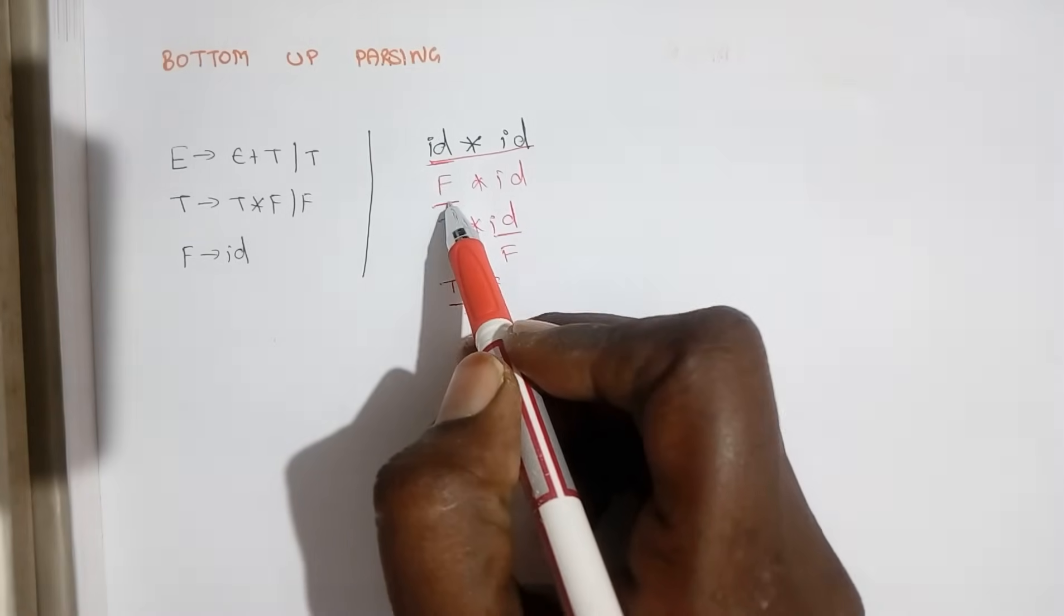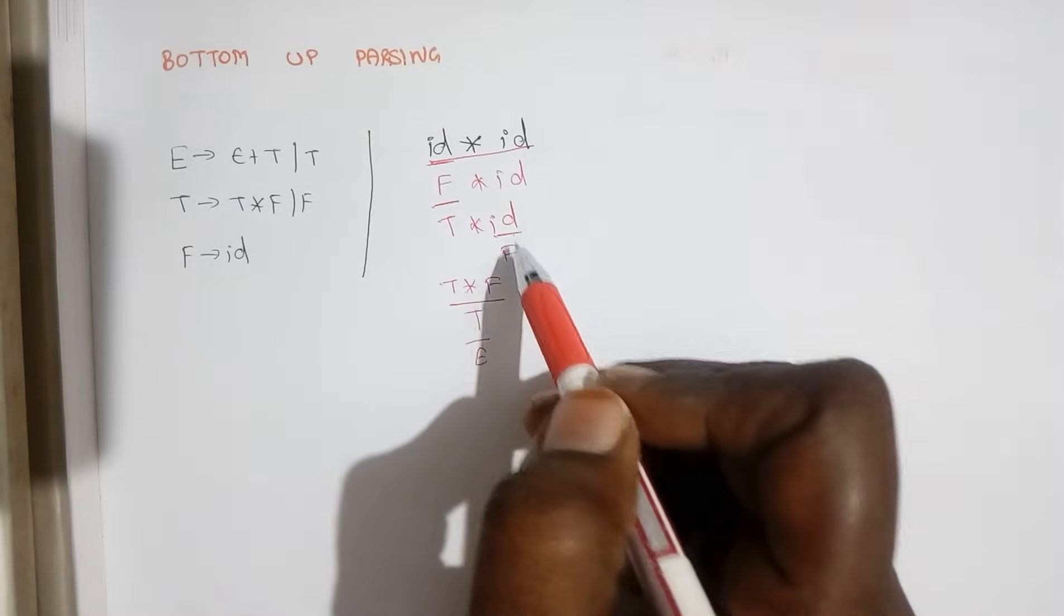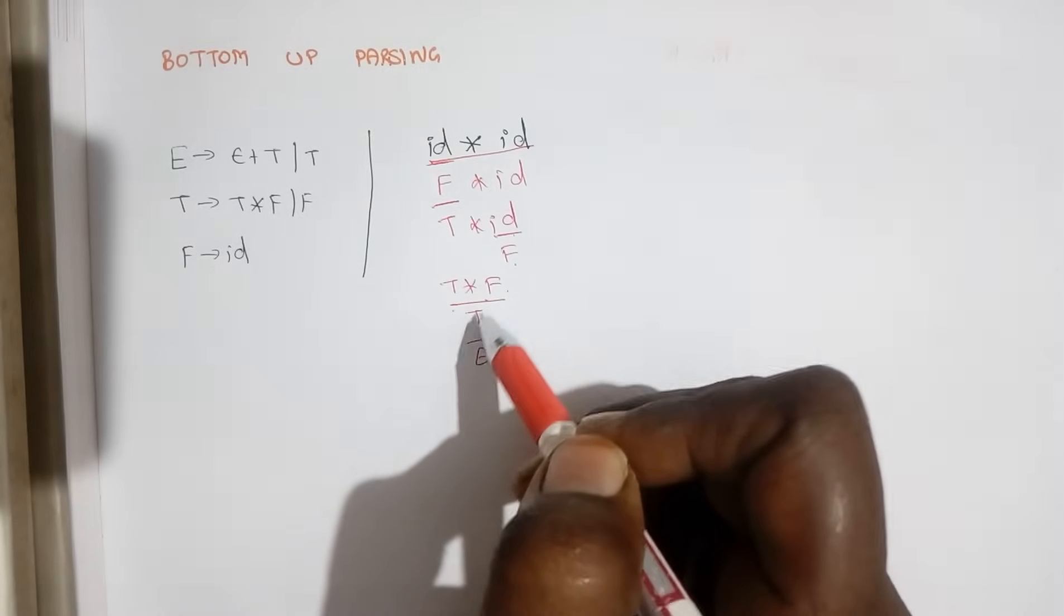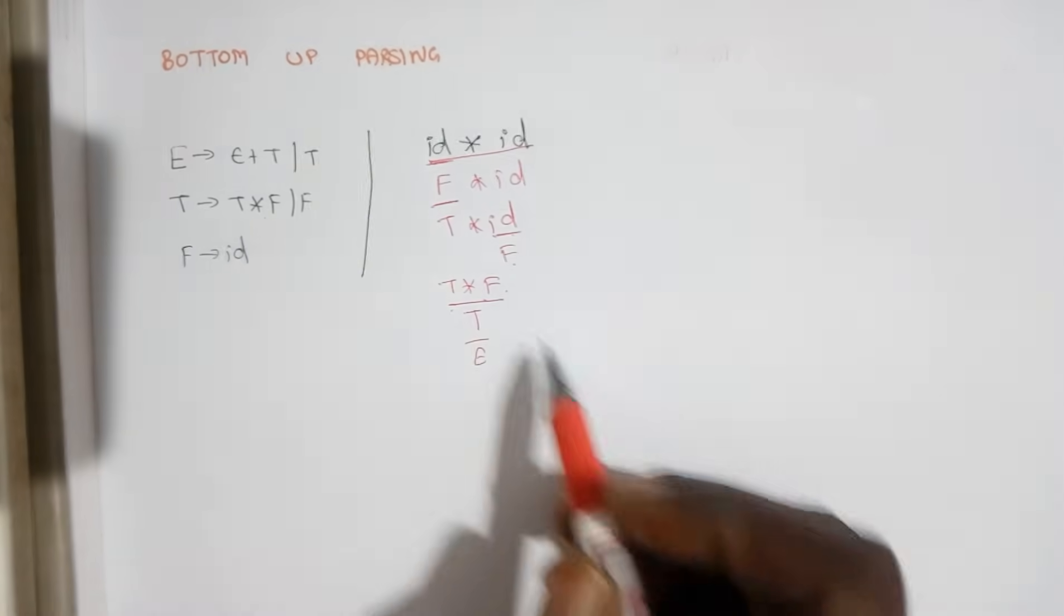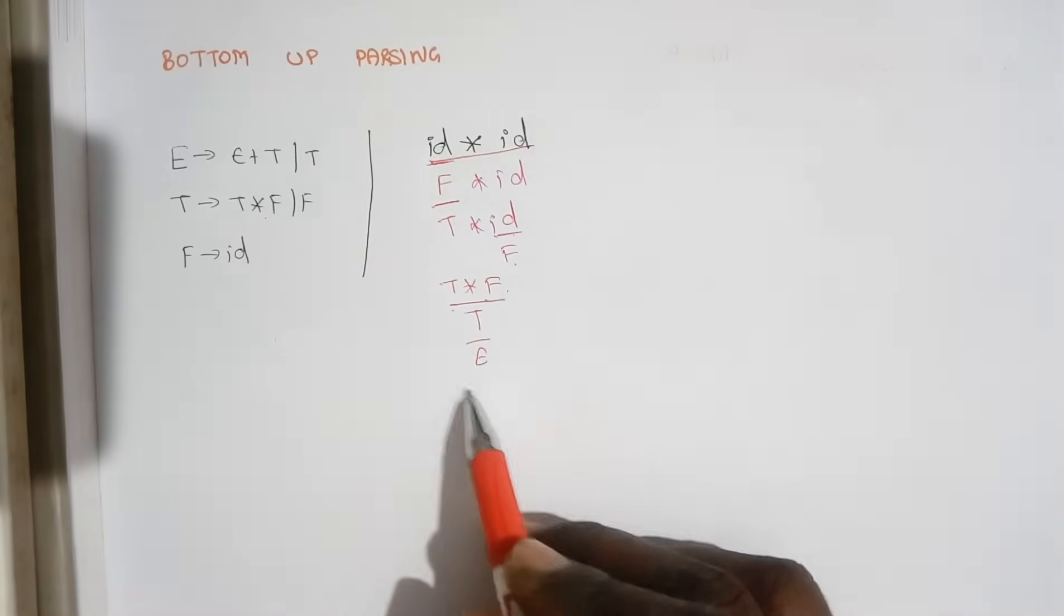So id to F, sorry, F to T and this id to F, T star F is reduced to T. We have a production T tends to T star F, so that is reduced to T and finally we got the starting symbol.